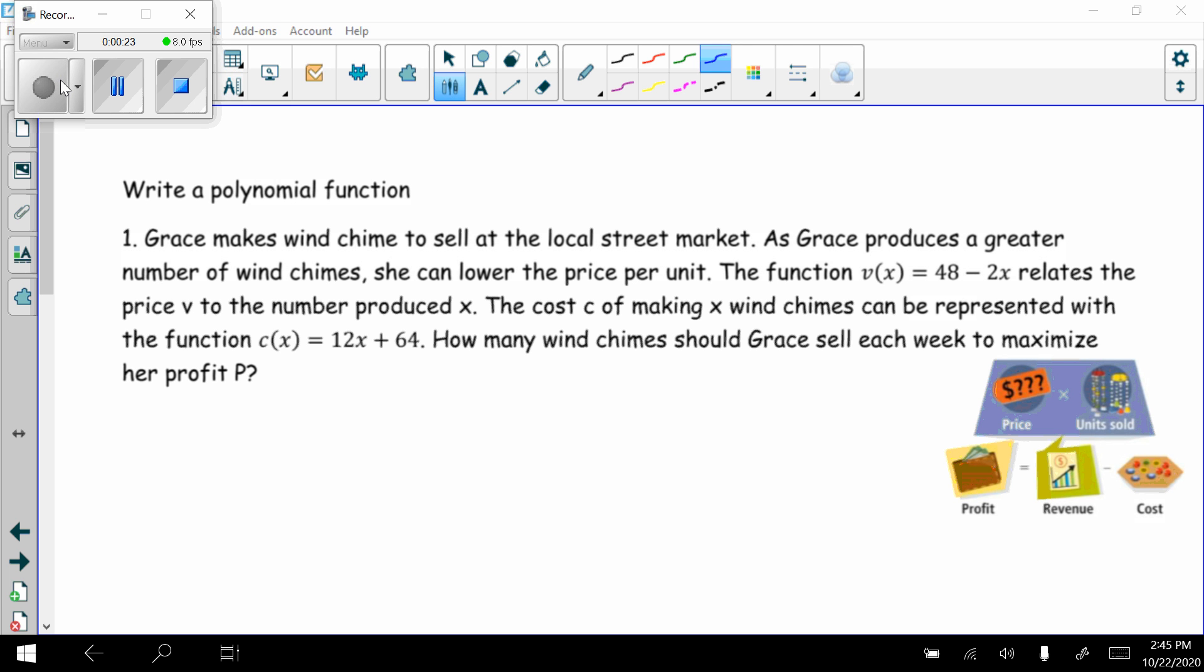The function V(x) = 48 - 2x relates the price V to the number produced x. The cost C of making x wind chimes can be represented with the function C(x) = 12x + 64. How many wind chimes should Grace sell each week to maximize her profit?